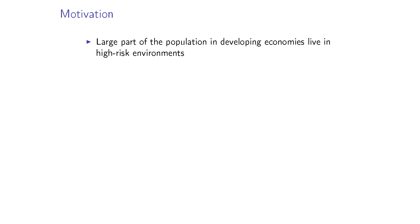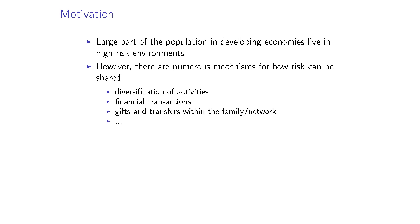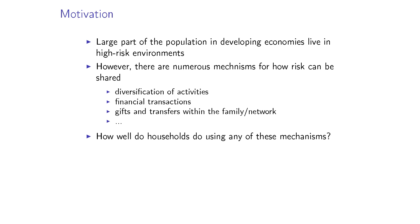For India, here's the motivation from my paper. A large part of the population in developing countries live in high-risk environments. There are numerous ways to cope: diversify the activities you're undertaking — trying to have a portfolio — or ex-post, after incomes get realized, engage in financial transactions including gifts and transfers among family networks. How well do any one of these mechanisms work? The key insight is we don't necessarily have to enumerate the mechanism; we just look at the outcome.